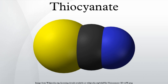Thiocyanate is produced by the reaction of elemental sulfur or thiosulfate with cyanide. The second reaction is catalyzed by the enzyme sulfur transferase known as rhodanese, and may be relevant to detoxification of cyanide in the body.